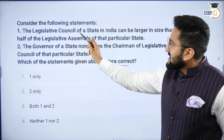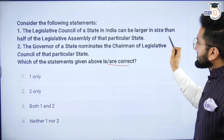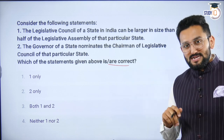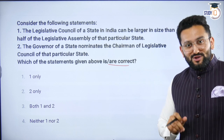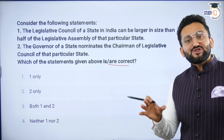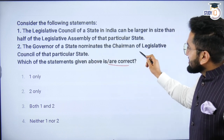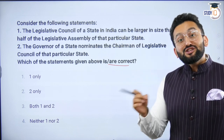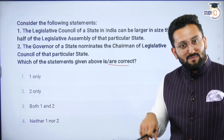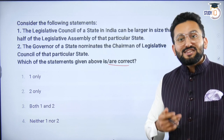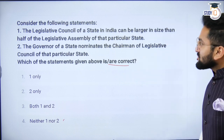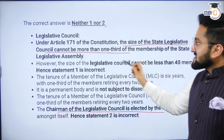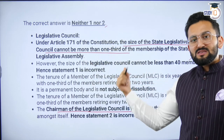Next question: 'The legislative council of a state in India can be larger in size than half of the legislative assembly of that state.' Our next topic is state legislature where we will discuss this. But as of now, you should know the strength of the legislative council cannot be more than one-third of the total strength of the legislative assembly — that is a rule under Article 171. 'The Governor of a state nominates the chairman of the state legislative council' — when it comes to state legislative council, the chairman is an elected position, elected from among the members of state legislative council. So in this case both statements are incorrect — the answer is neither one nor two.